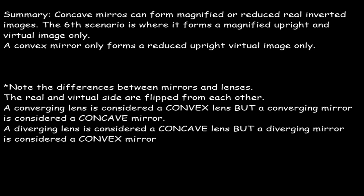That's all you have to remember for the mirrors. Concave mirrors can form magnified or reduced real inverted images. The sixth scenario is where it forms a magnified upright virtual image only. A convex mirror can only form a reduced upright virtual image. It's important to note the differences between mirrors and lenses — the real and virtual sides are flipped from each other. Also, a converging lens is a convex lens, but a converging mirror is a concave mirror. A diverging lens is a concave lens, but a diverging mirror is a convex mirror. It's important not to mix up these terminologies when remembering the ray diagrams of both mirrors and lenses.